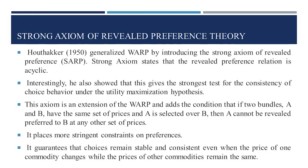Houthaker in 1950 generalised WARP by introducing the Strong Axiom of Revealed Preference, which states that the revealed preference relation is acyclic. He also showed that this gives the strongest test for the consistency of choice behaviour under the utility maximization hypothesis. This makes use of transitive comparisons between bundles as implied by the revealed preference relation.